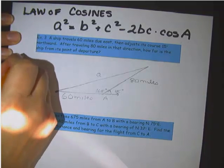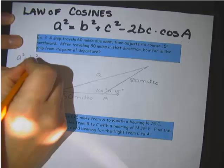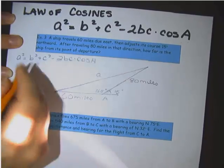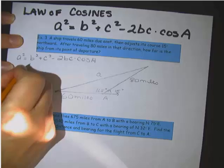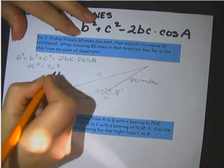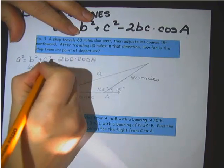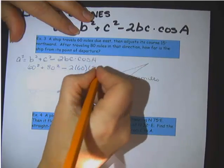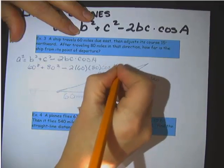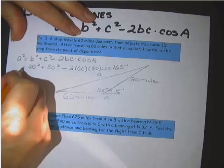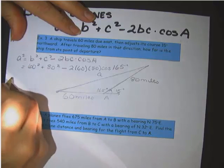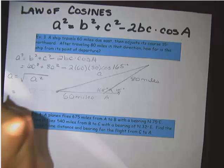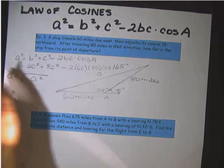So we're looking for a squared equals b squared plus c squared minus 2bc times the cosine of A. So our b squared and c squared are 60 and 80 minus, remember this is subtracted here, 2 times 60 times 80 times the cosine of the angle, which is 165. And then we put that in our calculator, and of course we're going to have to square root what we get. Square root all of that a squared. And I end up with 138.2 miles.